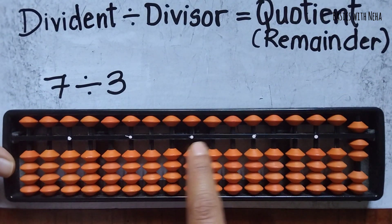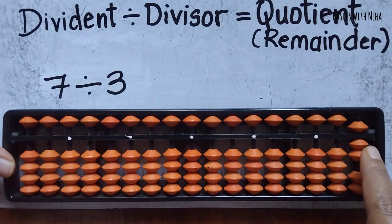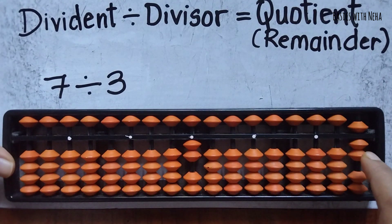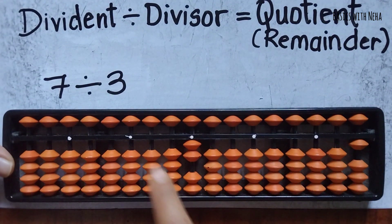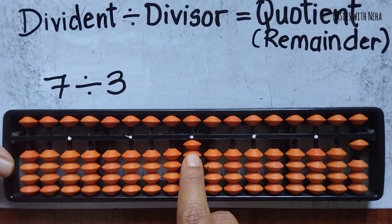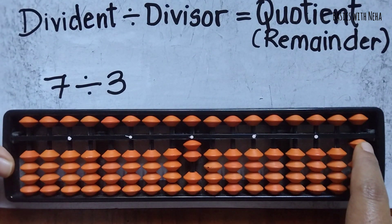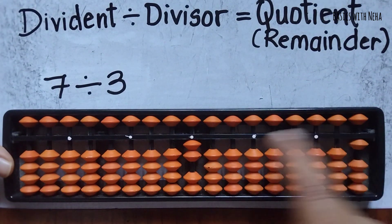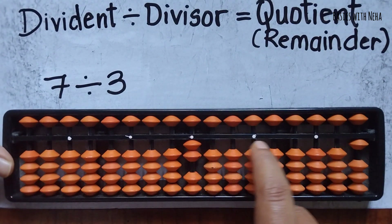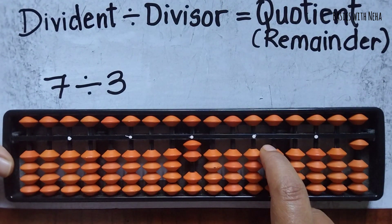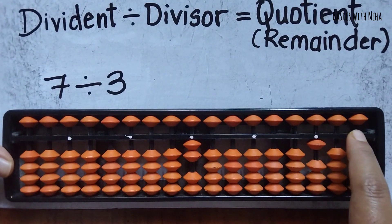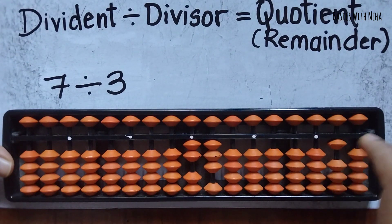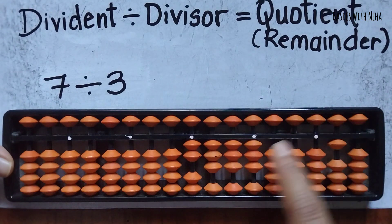The last rod considered in the quotient part is the same rod used for the answer. Three 2s are 6, so the answer is 2. I remove six beads — the quotient is 2 and the remainder is 1. If you want decimals, continue: bring down the 1 to make 10, three 3s are 9, remainder 1 again — it gives 2.3333, a non-terminating decimal.